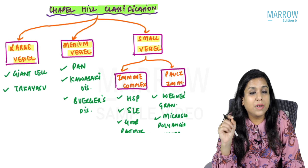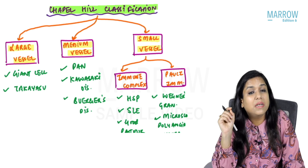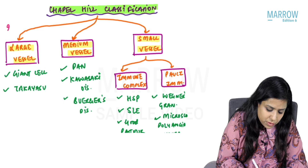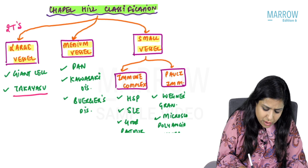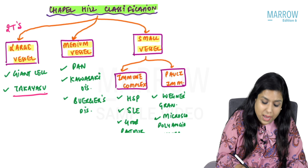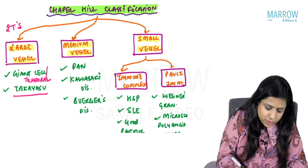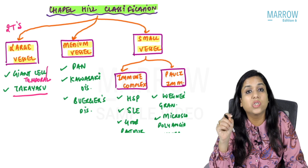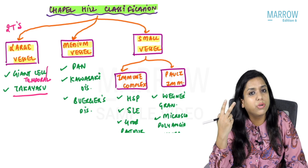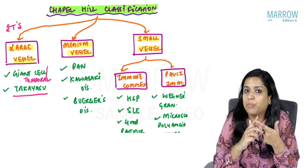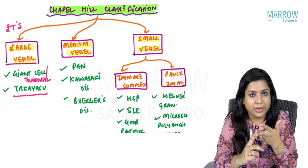For large vessel vasculitis, remember the two T's: Takayasu and Temporal. Temporal arteritis is also called giant cell arteritis. So two T's for large vessel — temporal arteritis and Takayasu arteritis.